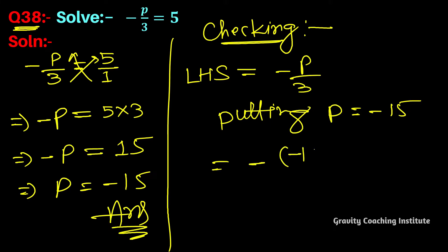So we get minus 15 by 3 equal to... First multiply the signs, minus minus plus, so 15 by 3. Cancel by 3, we get 5 equal to right hand side. Hence, verified.